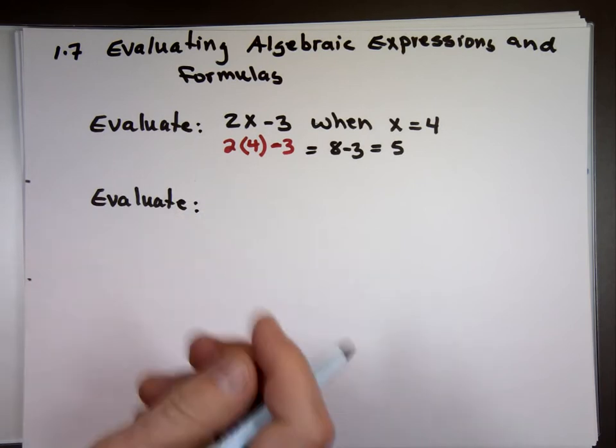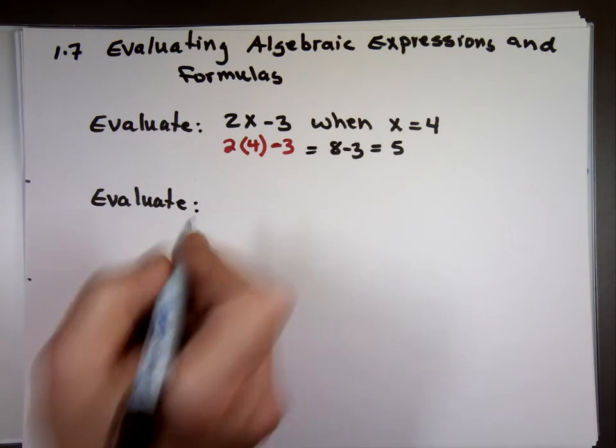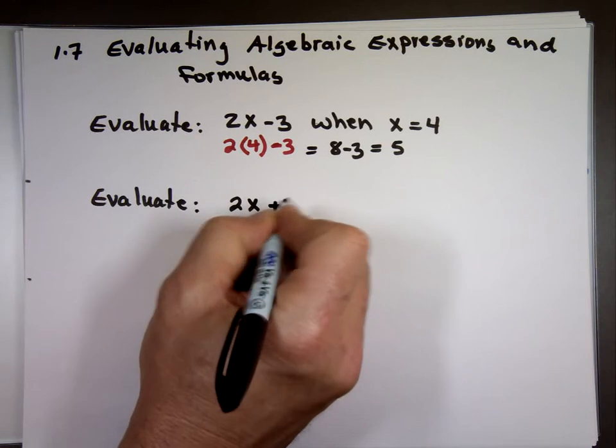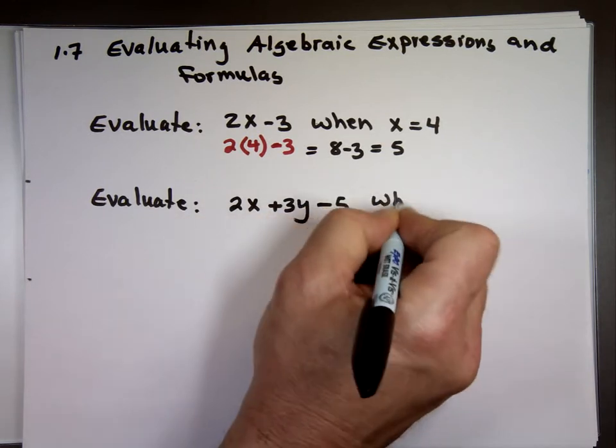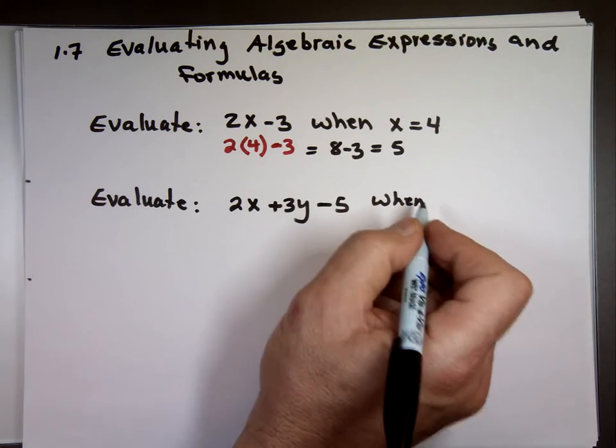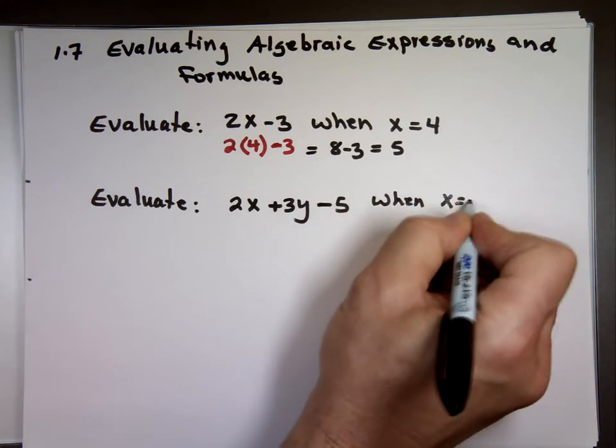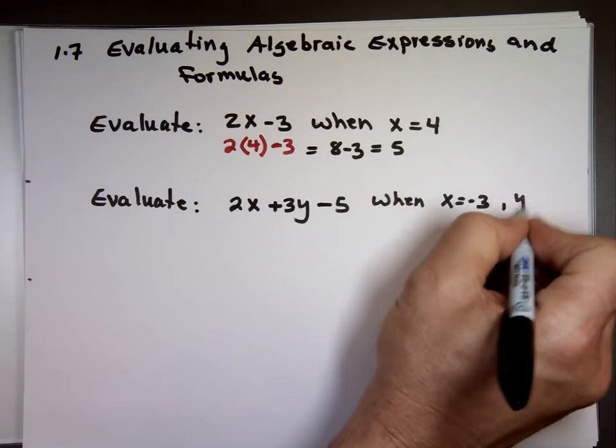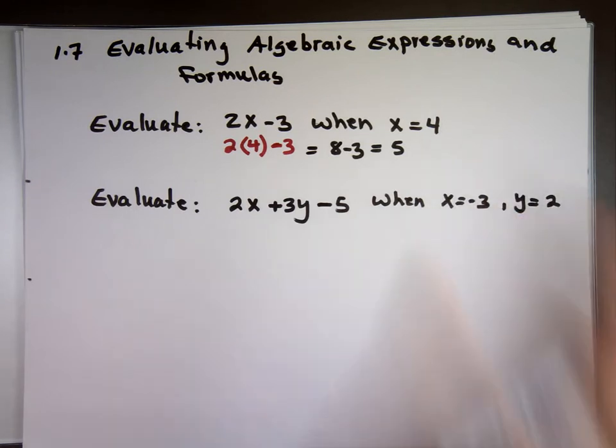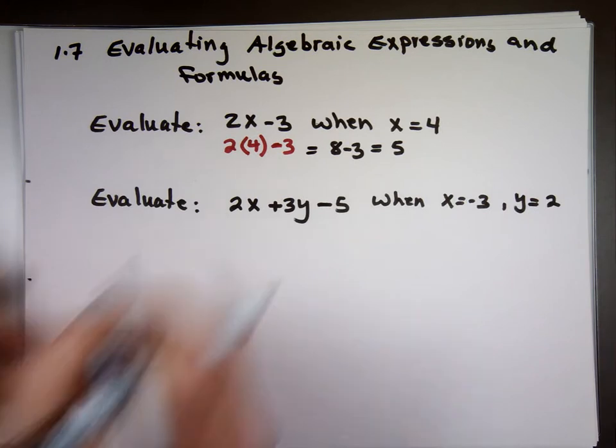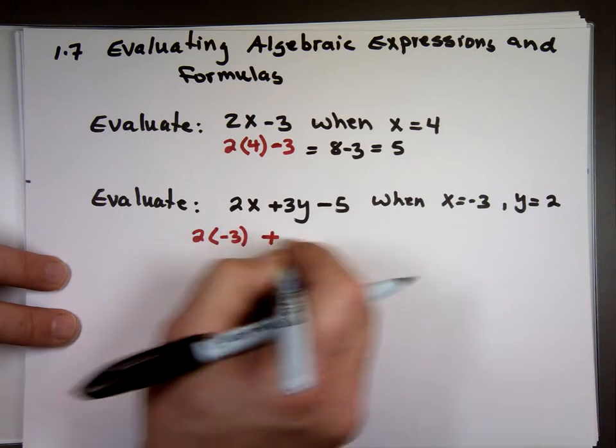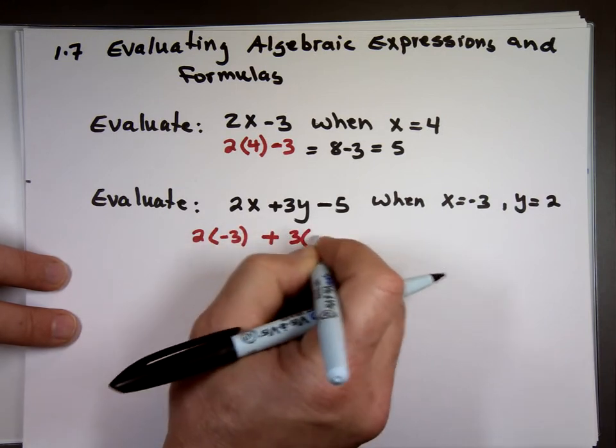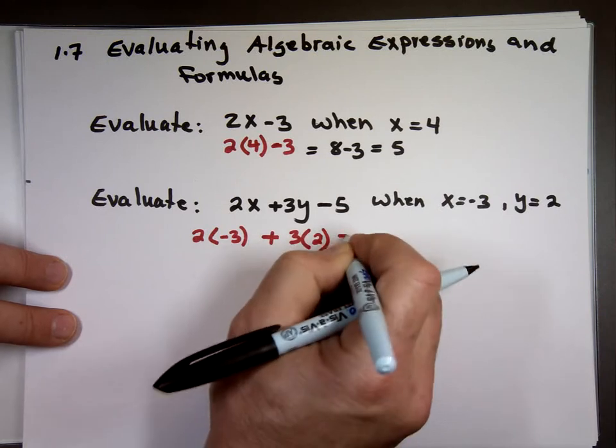Let's try another one. Evaluate 2x plus 3y minus 5 when x equals negative 3 and y equals 2. So here we go. 2 times in place of x, let's put negative 3 plus 3 times in place of y, let's put a 2. And there's the negative 5.